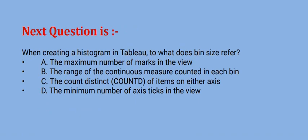Next question is: when creating a histogram in Tableau, to what does bin size refer? Options are option A the maximum number of marks in the view, option B the range of the continuous measure counted in each bin, option C the count distinct (COUNTD) of items on either axis, and option D the minimum number of axis ticks in the view. The correct option is option B. Thank you.